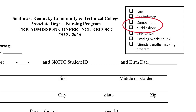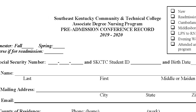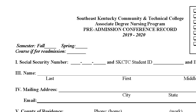You cannot apply to both, unfortunately. If you are an LPN that wants to bridge into our program, you're going to select 'LPN to RN Bridge.' The evening/weekend PN program is on the Cumberland campus only, so if you are interested in getting into our PN program, you are going to select 'PN.' This section is for the March 1st deadline programs that will start in the fall — simply check 'Fall.'